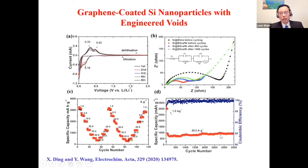Clearly, designing a hierarchical structure combining three strategies — nano-sizing, conductive coating, and introduction of engineered voids — will lead to high-performance, long-cycle-life silicon anodes.